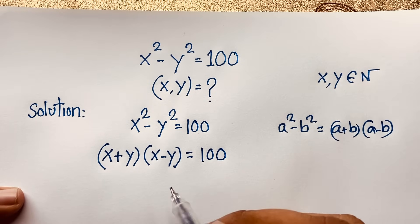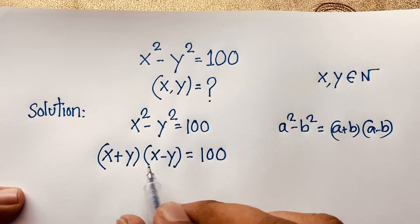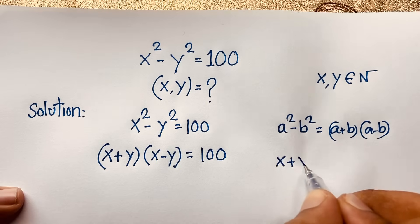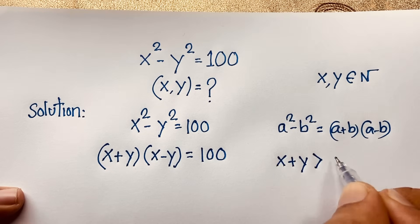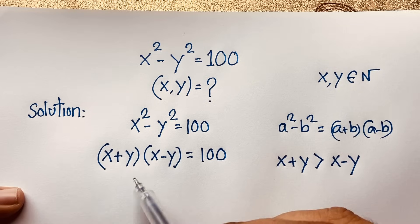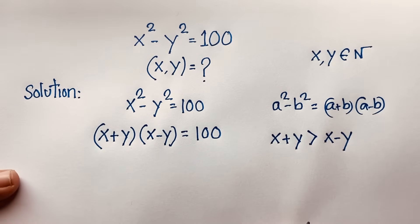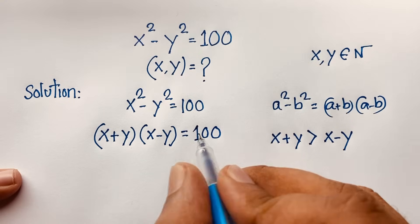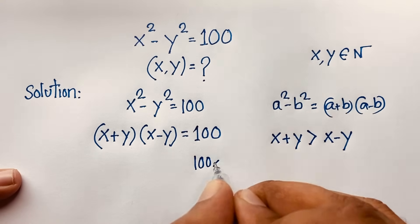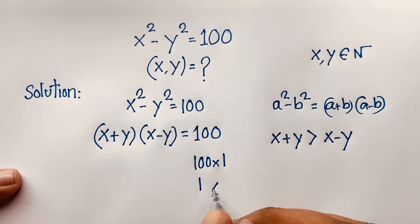So we need to find x plus y and x minus y such that their product is 100. Now, x plus y is always greater than x minus y. The factor pairs of 100 include: 100 times 1, or 1 times 100.